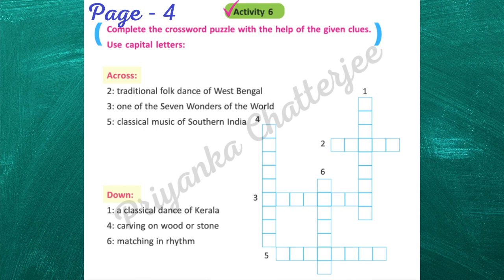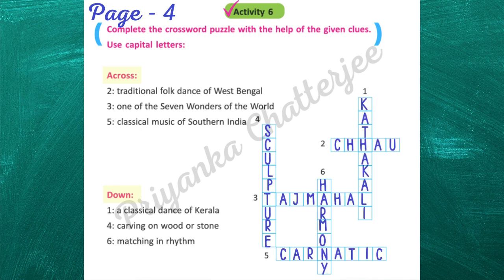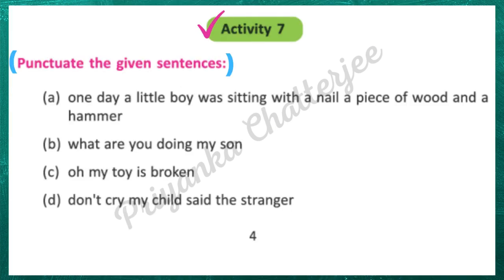Next, activity 6 — a crossword. Traditional folk dance of West Bengal: Chau. One of the Seven Wonders of the World: Taj Mahal. Classical music of Southern India: Carnatic. Classical dance of Kerala: Kathakali. Carving on wood or stone: Sculpture. Matching in rhythm: Harmony. I hope you remember.